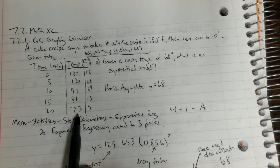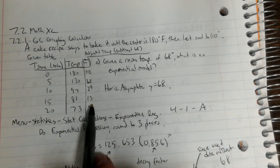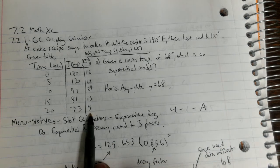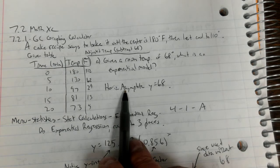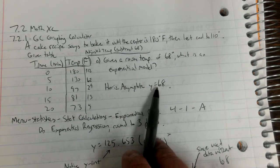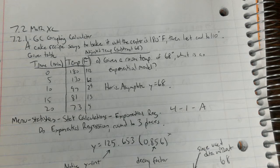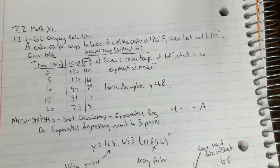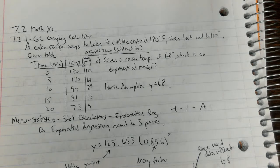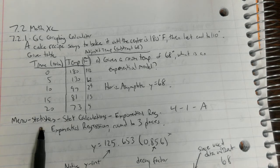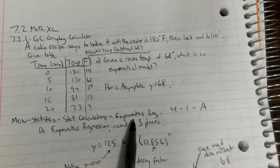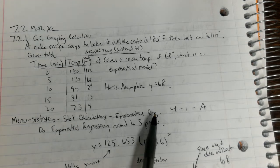You could use the spreadsheet feature in your calculator to do that by taking this column and just saying minus 68, or you could just do it manually. This one's going to have a horizontal asymptote at y equals 68 because that's your room temperature. So what you're going to do is do menu statistics, stat calculations, exponential regression, not power regression.